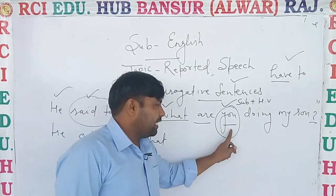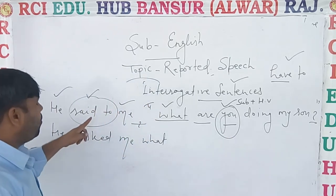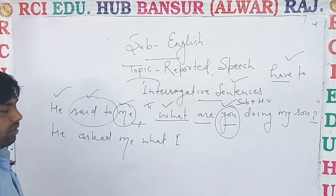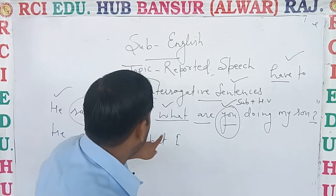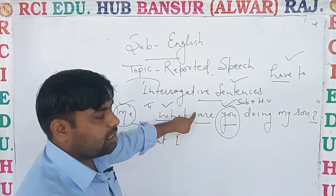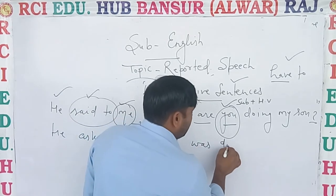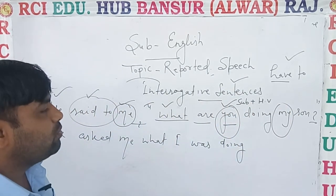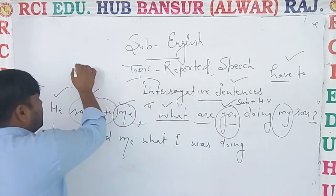Firstly we will take it — second person 'you' is given. Change according to object. Object is 'me', then change into 'I'. Now tense is present inside, outside is past — change into past. 'Is' changes into 'was'. According to subject — subject is 'he', then 'my' changes into 'his'.